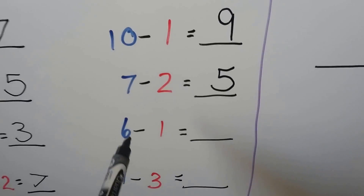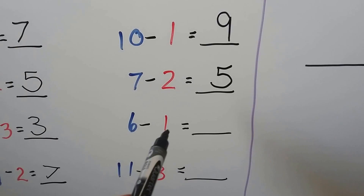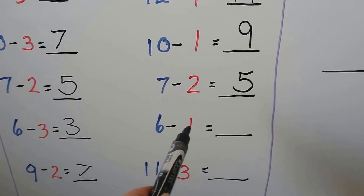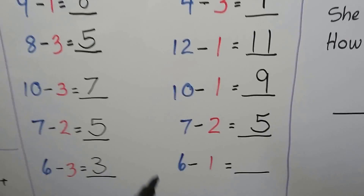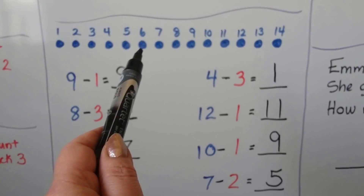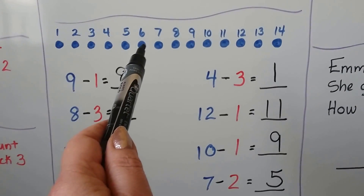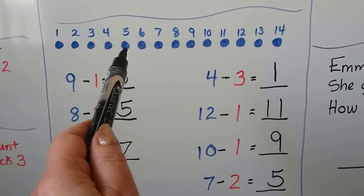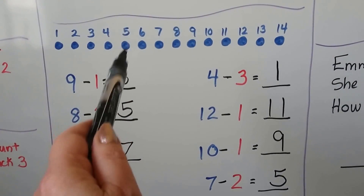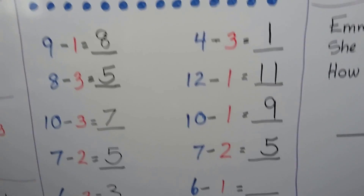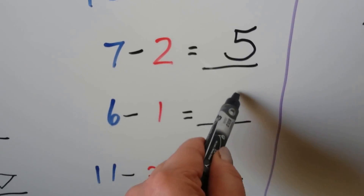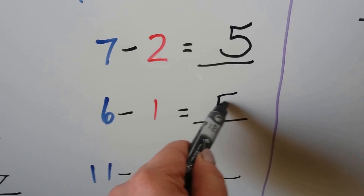We have a couple more. 6 minus 1. We start at the 6. We count back 1. There's the 6. Let's count back 1: 1. That brings us to 5. 6 minus 1 is equal to 5.